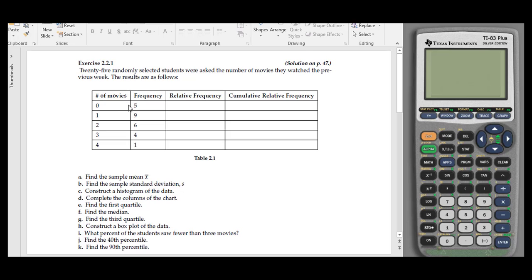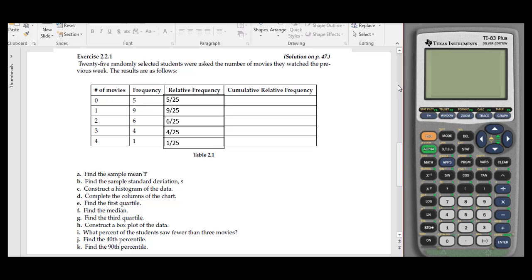They found students watched between 0 and 4 different movies, with frequencies of 5, 9, 6, 4, and 1. To calculate relative frequencies, we take the frequency and divide by the total number of people surveyed. So the relative frequency for 0 movies is 5 out of 25.